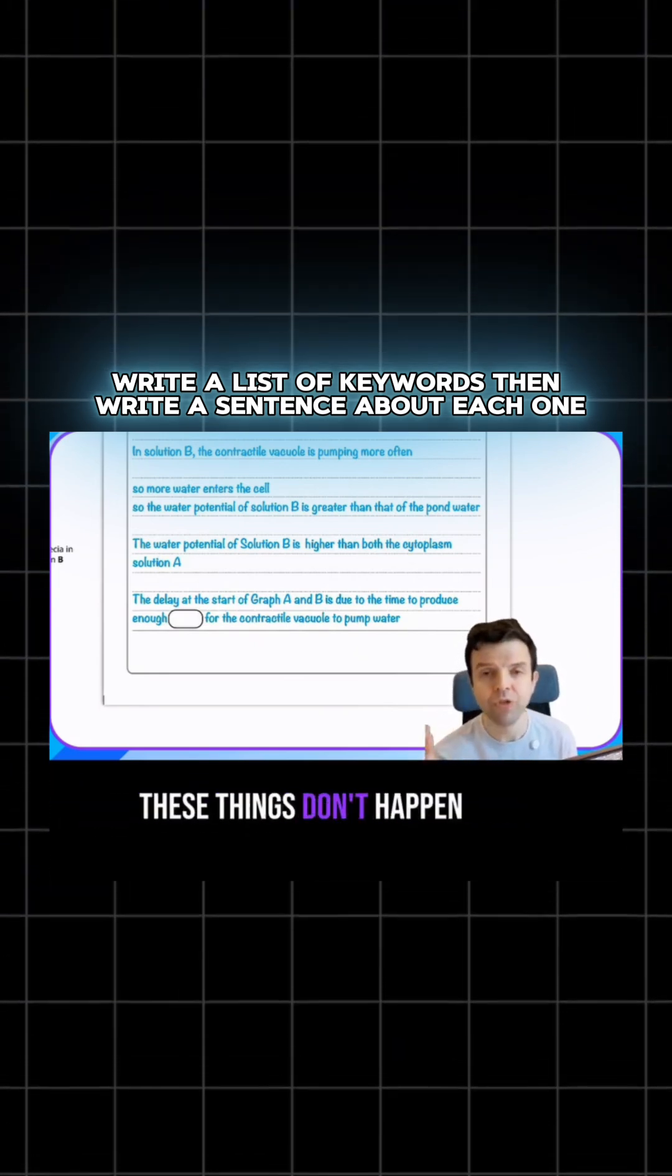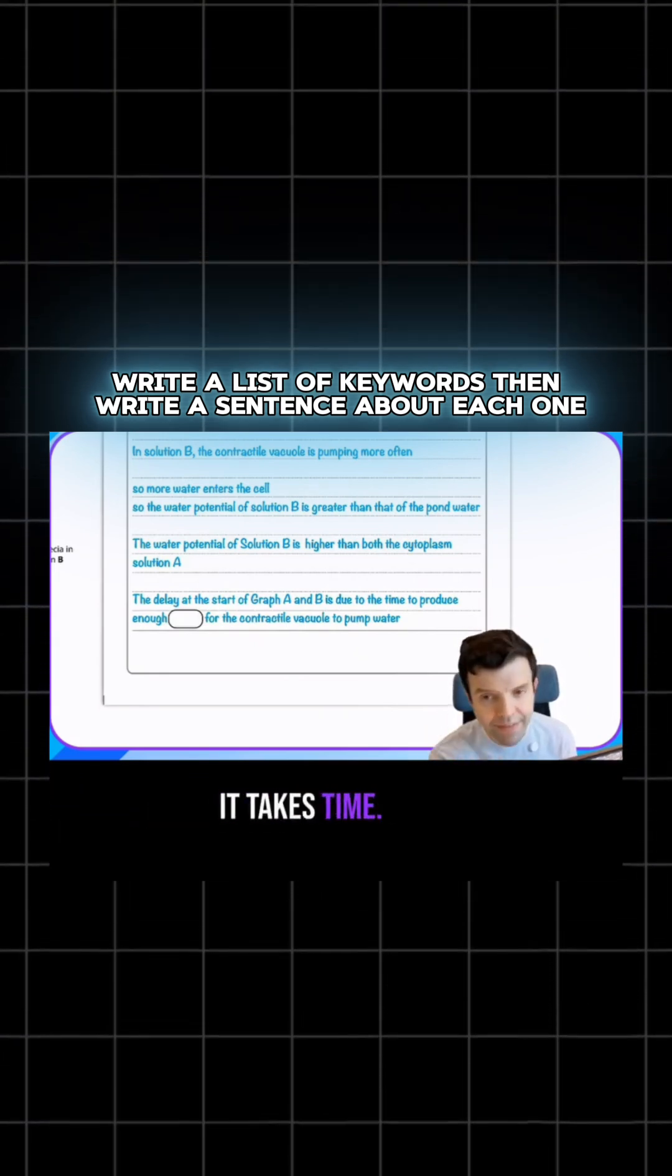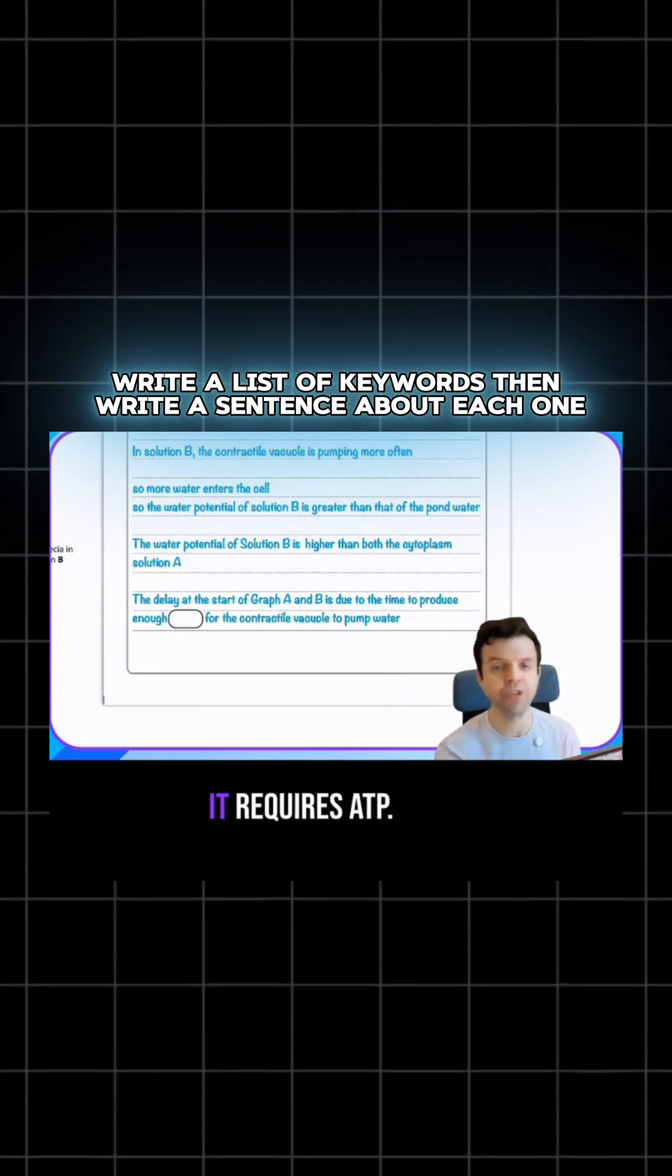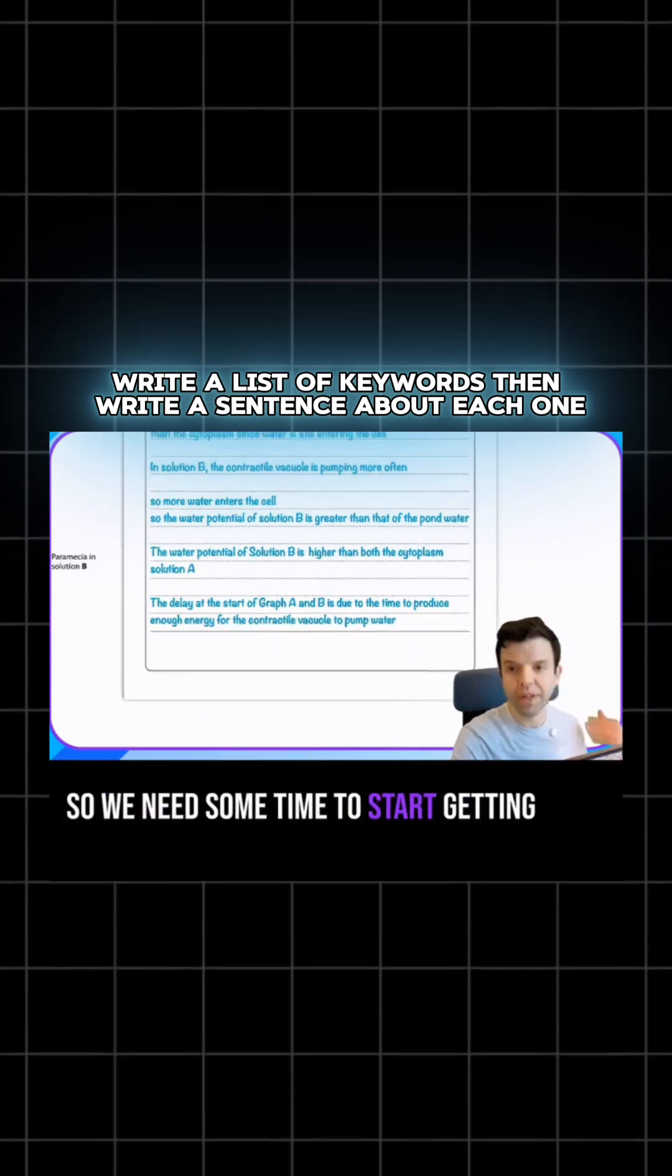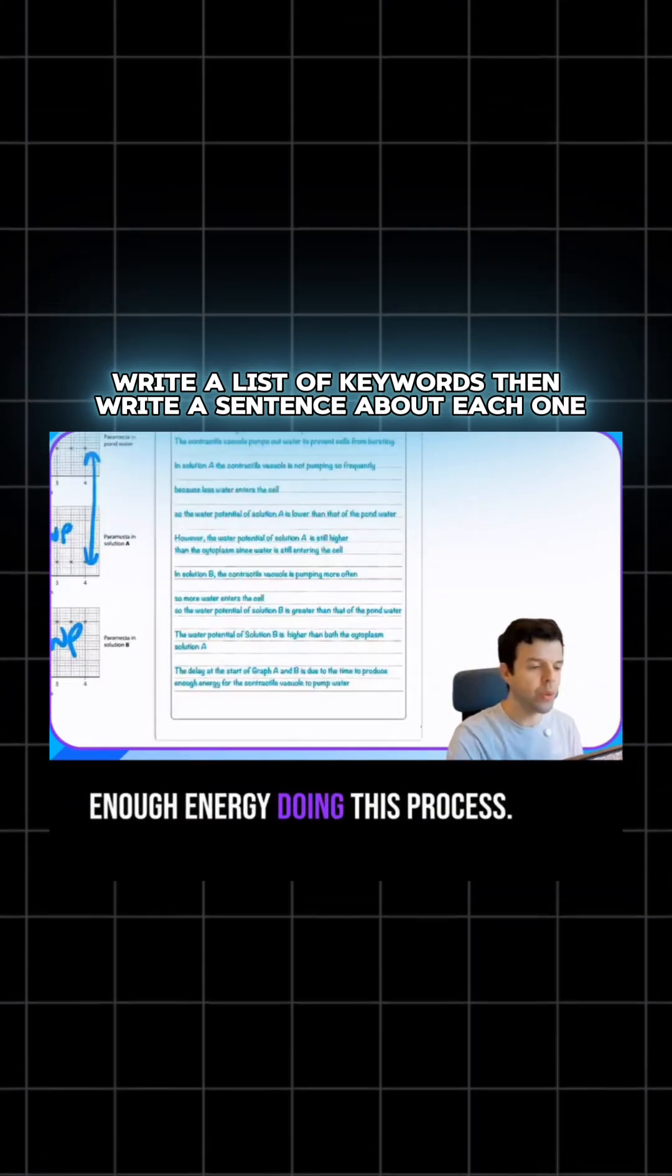Because the animal is trying to adjust. The animal is trying to equilibrate. These things don't happen instantly. It takes time. This is an active process. It requires ATP, so we need some time to start getting enough energy for doing this process.